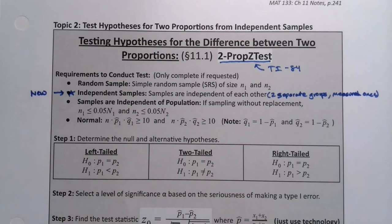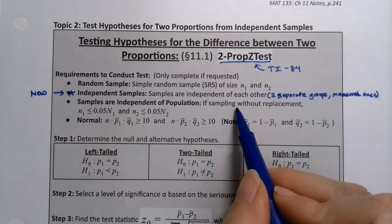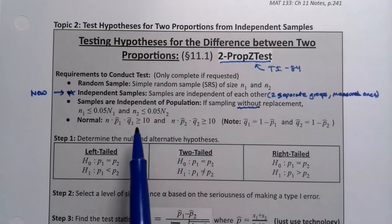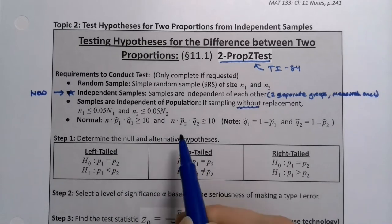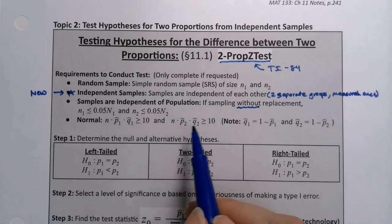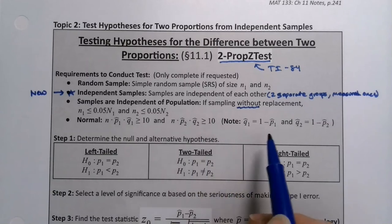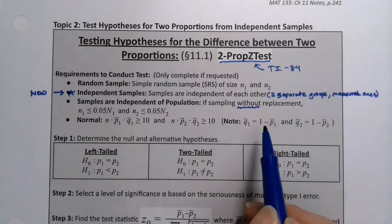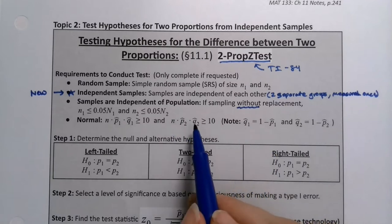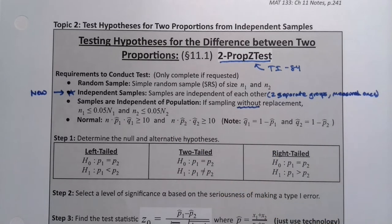If you're sampling with replacement, which is pretty rare, then independence is automatic and we don't have to think about it. We only worry when sampling without replacement. And of course, n times p1 times q1 must be greater than or equal to 10, and n times p2 times q2 must be greater than or equal to 10, where q1 and q2 are the complements of p1 and p2 — the probability of success and failure we learned in the binomial distribution in chapter six.